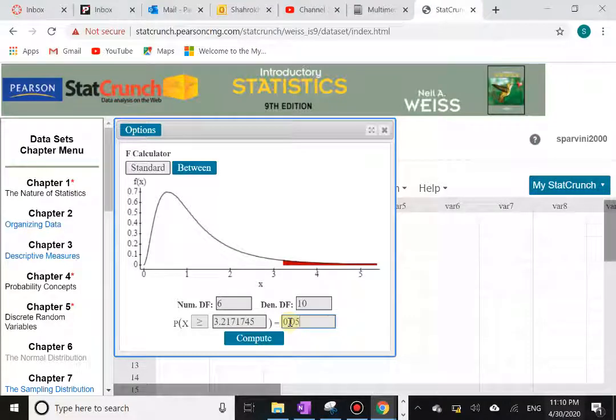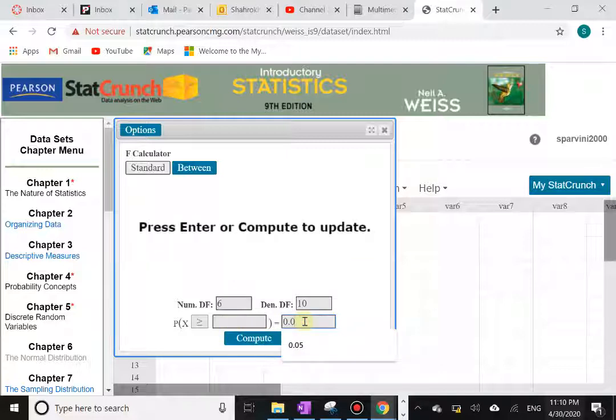Boom, and there you go. That's the 3.217. And then you just change that one to whatever you want. 0.025 I believe that was another one. There's 0.025, and then 0.01 was this one.